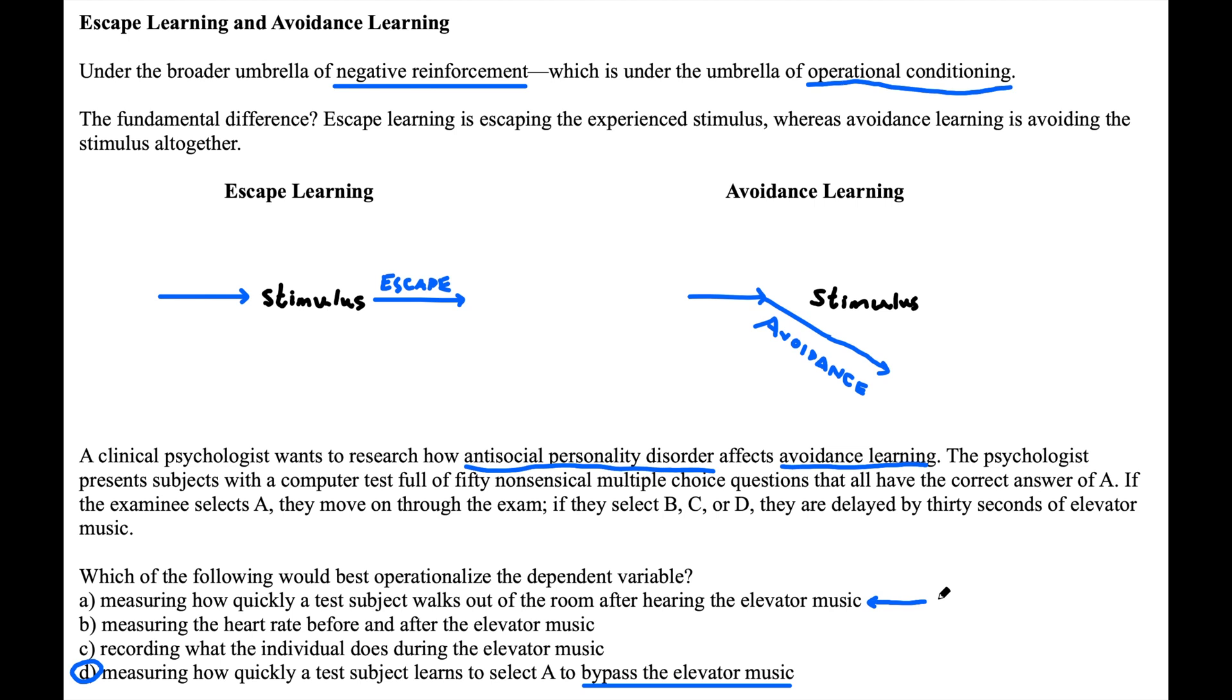B and C, on the other hand, have very little to do with even operant conditioning in general. So our correct answer is D. And this question was modeled after a real AAMC practice question.